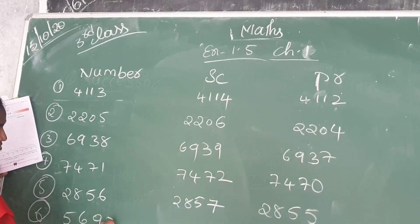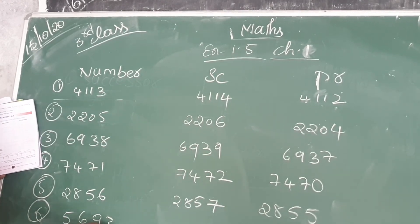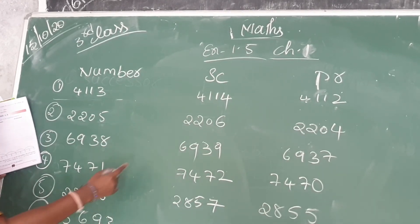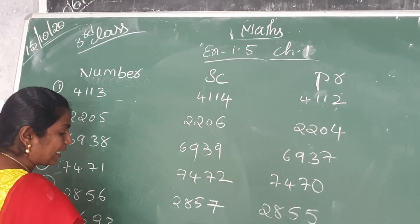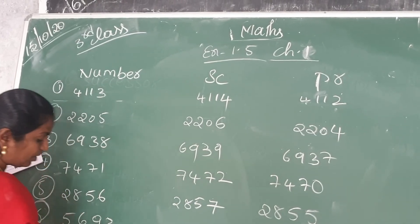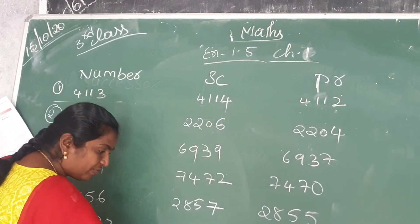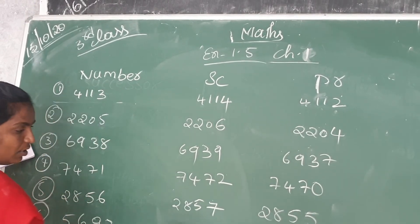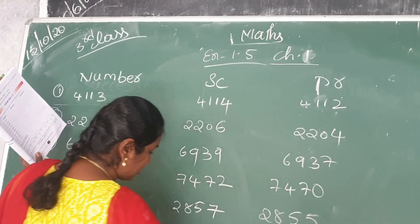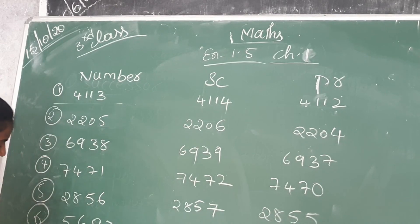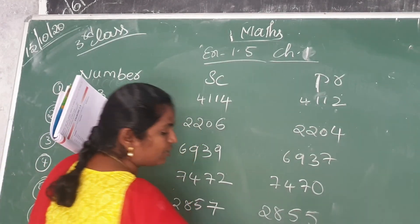Sixth one: 5693. Successor — 93's after number is 94, so the successor is 5694. Predecessor means before number — 93's before number is 92, so the predecessor is 5692.